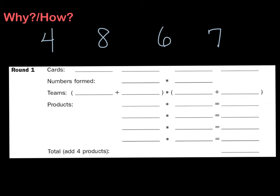You're going to write those card numbers down where it says cards. You can write these in any order, and I'm just going to write them in the order that I wrote them above. Then what you're going to do is make two two-digit numbers with those numbers that you picked from the deck.